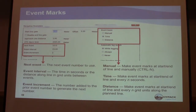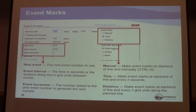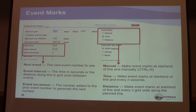Event marks are also set in navigation parameters. You configure the next event number, event interval (time in seconds or distance along the line between events), and event increment number added to the prior event number to generate the next. You can mark events manually with Control-End, or have them made automatically at start and end of line, by time, or by distance.